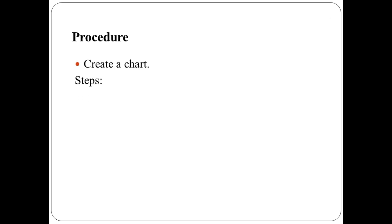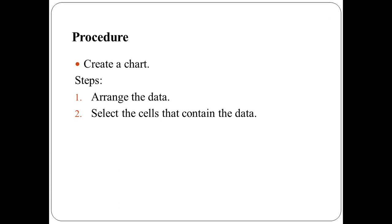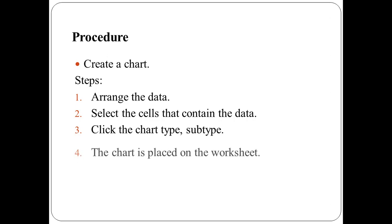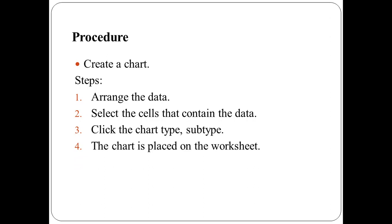To create a chart, the steps are: on a worksheet, arrange the data that is to be plotted in a chart. Select the cells that contain the data to be used for the chart. On the relevant menu options, click the chart type and then chart subtype. By default, the chart is placed on the worksheet as an embedded chart. If the user wants to place the chart in a separate chart sheet, one can change its location by clicking anywhere in the embedded chart to activate it, then using the relevant option to place the chart to a new location on a new sheet.